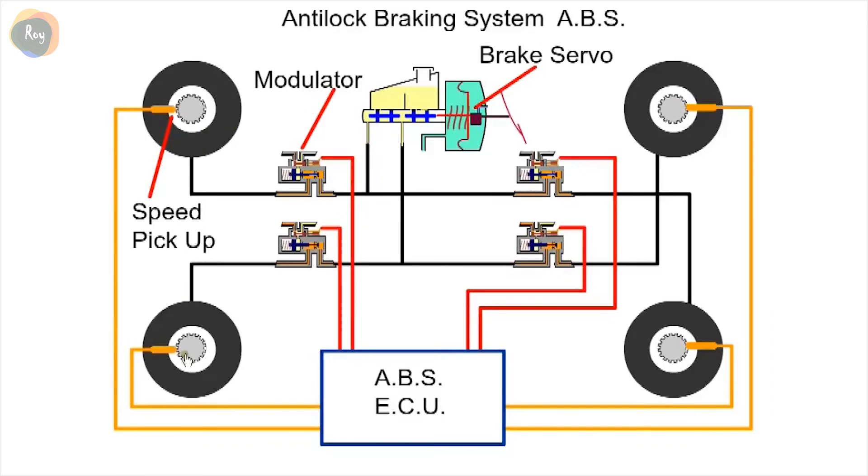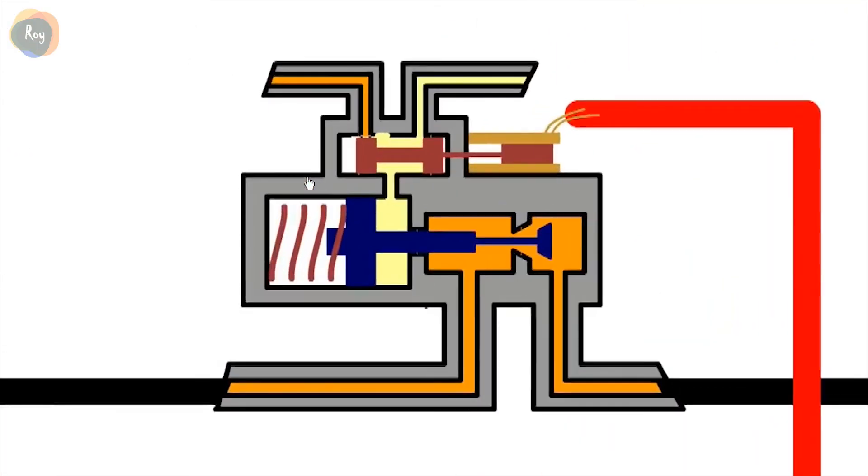Between the master cylinder and wheel is a modulating valve. Imminent wheel lock can be determined by one wheel decelerating at a higher rate than the other three wheels, or a wheel decelerating at a rate which is physically not possible without locking up. When the ECU determines that a wheel is on the verge of locking, the ECU activates the modulating valve and releases the brake pressure.